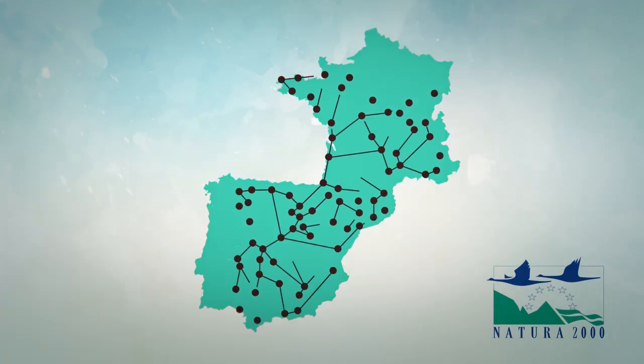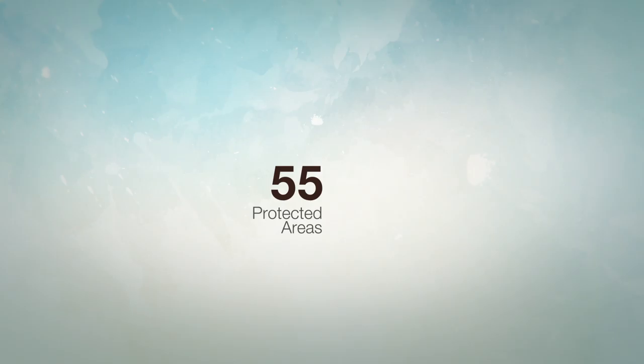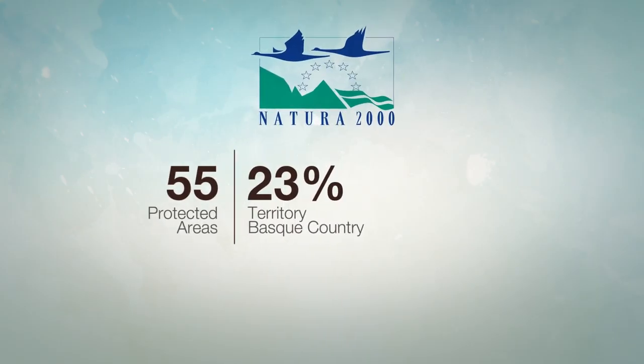To preserve them, the Basque Country has 55 protected areas within the European Natura 2000 network, accounting for 23% of its territory.